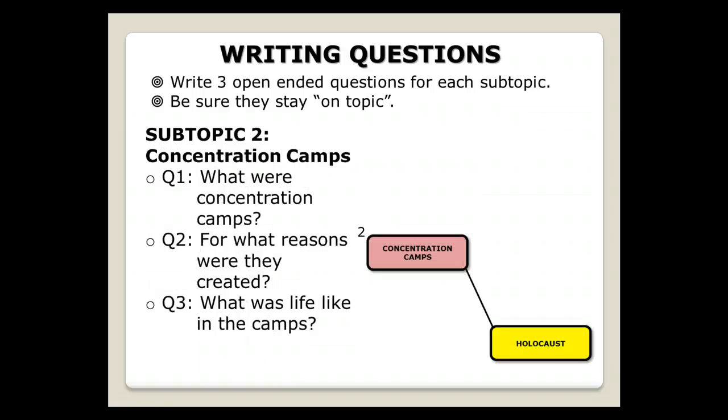Here's my second subtopic or my second area of focus, the concentration camps, and these are examples of open-ended questions for that. What were concentration camps? What were they? That's an open-ended question. It's not a yes-no question. It's not a question that can just be answered with one piece of evidence. It takes a whole bunch of evidence put together to answer that question. For what reasons were they created? And what was life like in the camps?